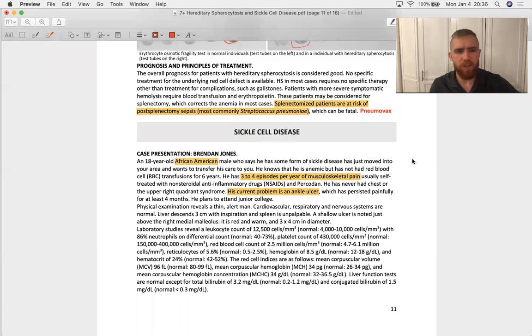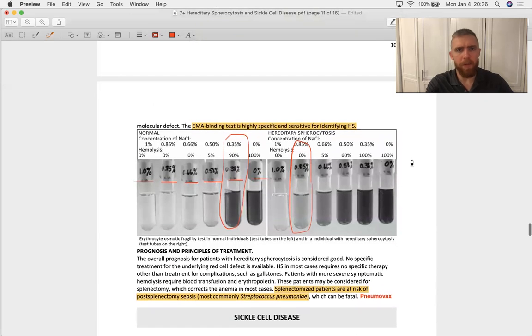Finally, splenectomized patients are at risk of sepsis, most commonly strep pneumonia, so right after you take the spleen out, probably a good idea to get these patients the vaccine for streptococcus pneumoniae so that they can kind of not worry about that follow-up sequelae. So that's anemias, hemolytic anemias in general, spherocytosis. I'll talk about sickle cell disease another time, thank you very much.